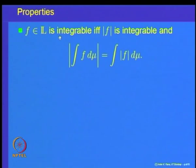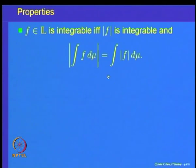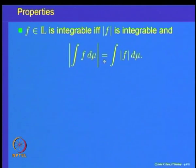This is an important criterion — an equivalent way of defining integrability: f is measurable and |f| has finite integral. Also, for any integrable function, the absolute value of the integral of f d-mu is less than or equal to the integral of |f| d-mu. This is a less-than-or-equal relation, not equality — that was a typing mistake in the notes.